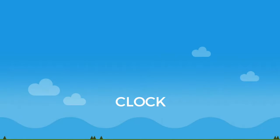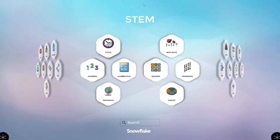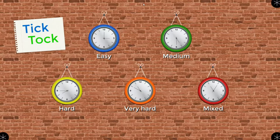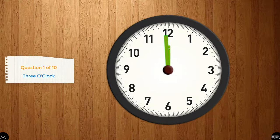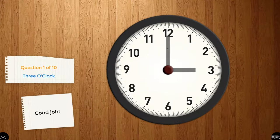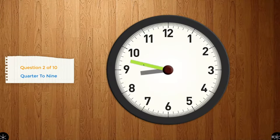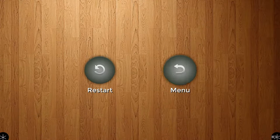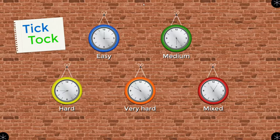The Clock app supports telling time to the hour, half hour, quarter hour, and 20 minutes on an interactive analog clock. Select the Clock app icon from the menu to open it. There are four levels of difficulty and one clock that provides mixed levels. Tap on a clock to open it. Directions for setting the clock appear on the left hand of the screen. Feedback is provided after each try. At the end of a round, the student is given the option to restart and play the round again, or return to the main menu and make a new choice.